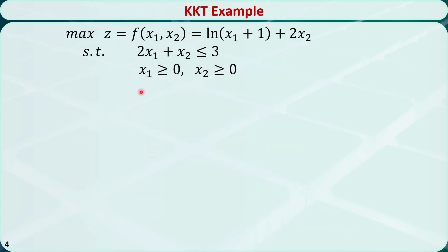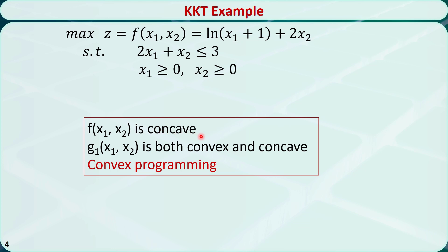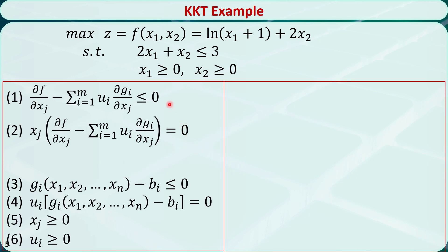Let's illustrate the KKT conditions with an example. This is a maximization problem with two variables, x1 and x2. The objective function is nonlinear, so it is a nonlinear programming problem. We can use the techniques introduced in the previous video titled 'Convex and Concave Functions' to determine whether the objective function and the constraint are convex or concave. It turns out the objective function is concave and the constraint is both convex and concave, so the problem is a convex programming problem. Now let's check the KKT conditions. We have two variables, so n is equal to 2, and we have only one constraint, so m is equal to 1.